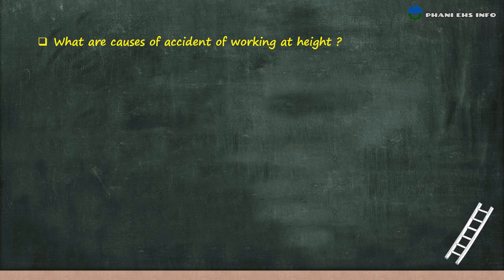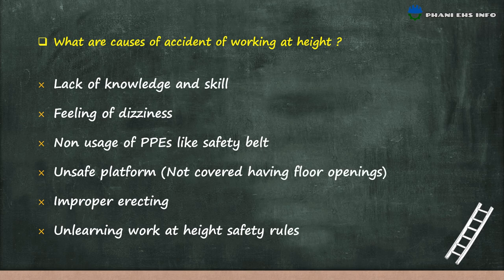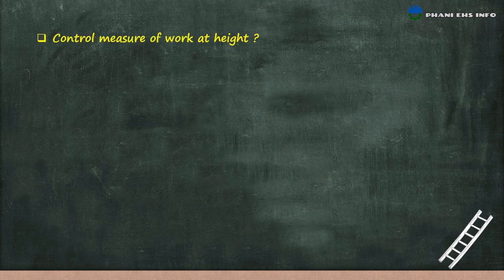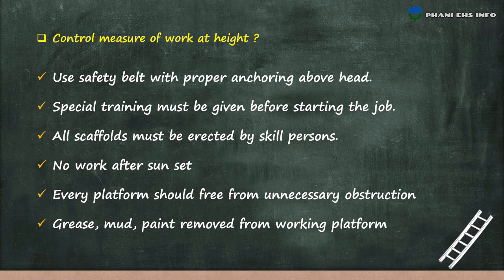What are the causes of accidents when working at height? Lack of knowledge and skills, feeling of dizziness, non-usage of PPE like safety belt, unsafe platform, improper erecting, and not learning work at height safety rules. Control measures: use a safety belt with proper anchoring above the head; special training must be given before starting the job; all scaffolding must be erected by skilled persons; no work after sunset; every platform should be free from unnecessary obstructions; and grease, mud and paint should be removed from the working platform.